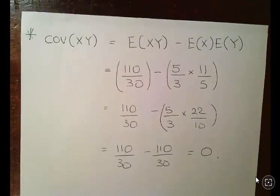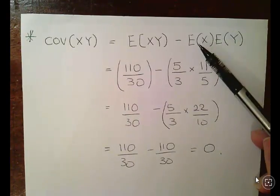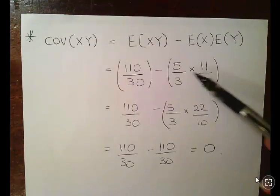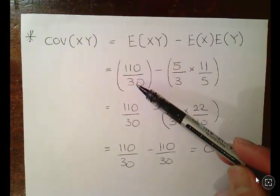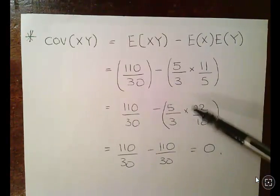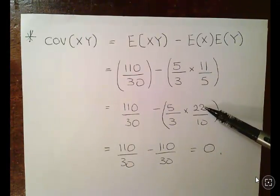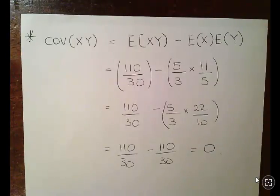The covariance of X and Y equals the expected value of XY minus the expected value of X times the expected value of Y. The expected values of X and Y were calculated in the previous video: E[X] = 5/3 and E[Y] = 11/5. Multiplying these: to put things over 30, we get 5×22 over 3×10 = 110/30. So covariance = 110/30 − 110/30 = 0.